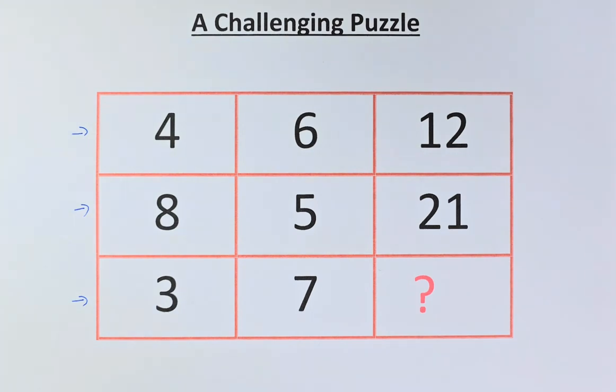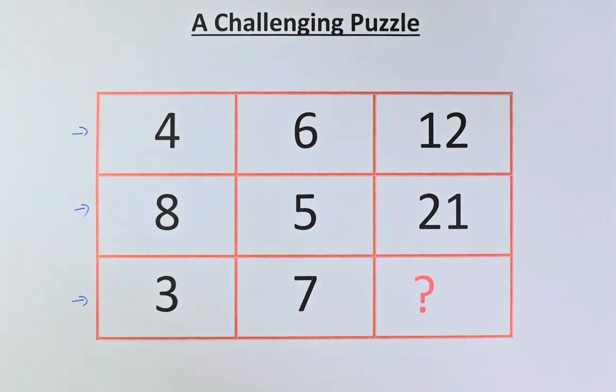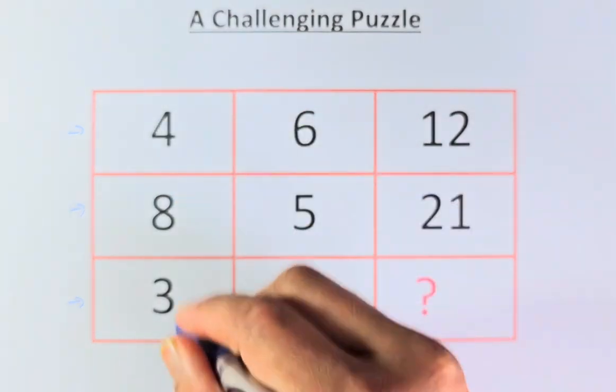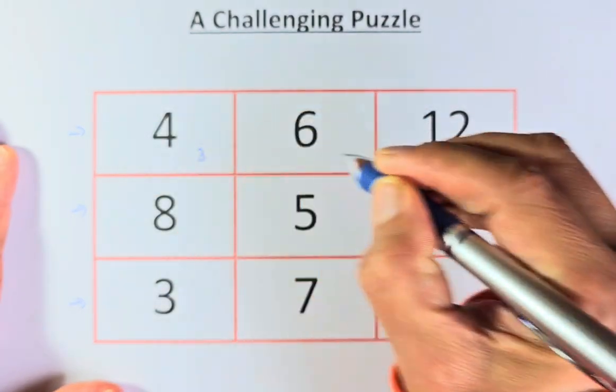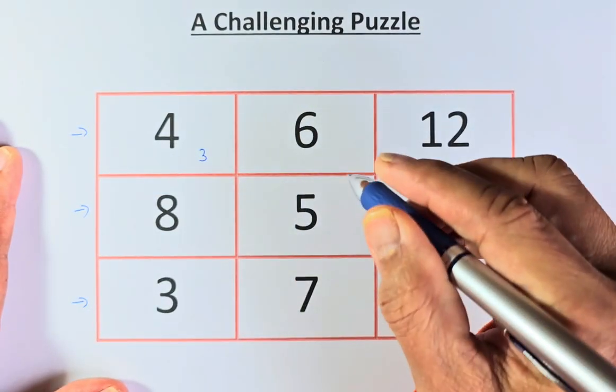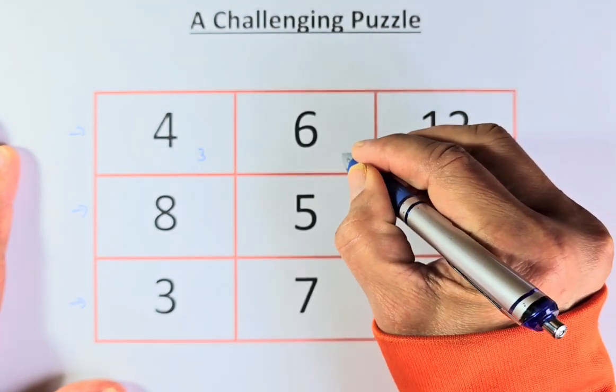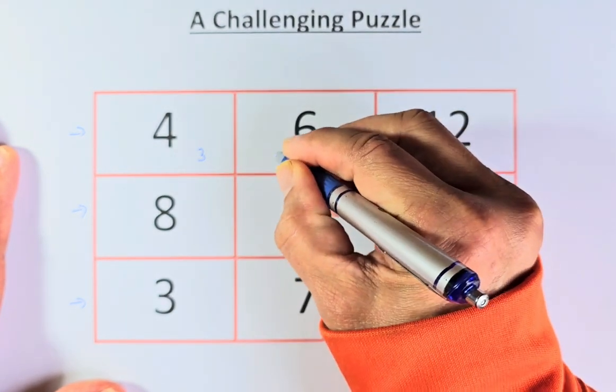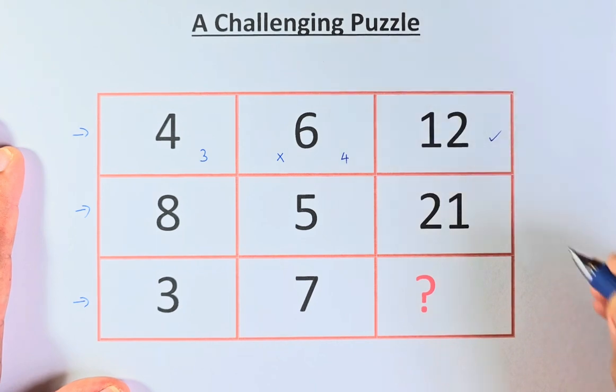So to solve this, you need to think outside the box. What we are going to do is minus 1 from the numbers in the first column. So 4 becomes 3. In the second column, we are going to minus by 2. So 6 becomes 4 and then you multiply them. 3 multiplied by 4, that will give us 12.